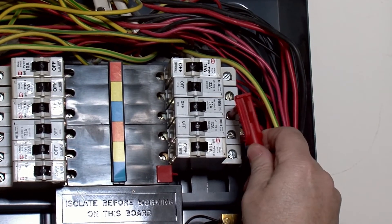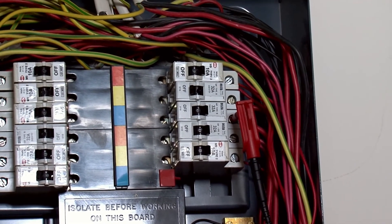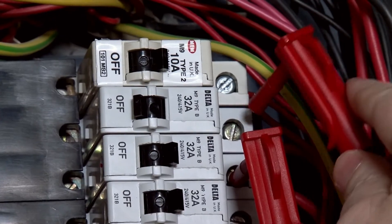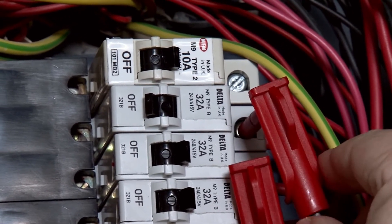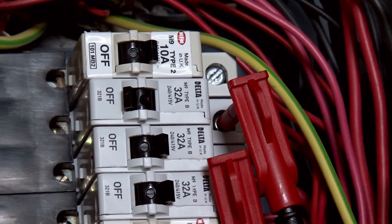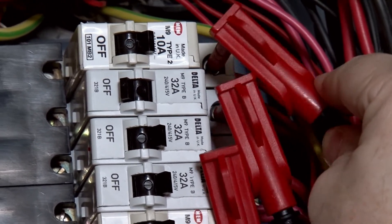The voltage leads come with clips and probes, or for simple connections to MCB screw heads and the like, these handy magnetic probes. For this system we need to connect three phases and the neutral.